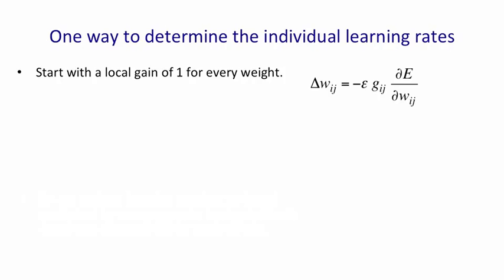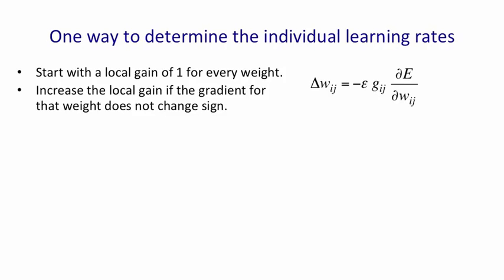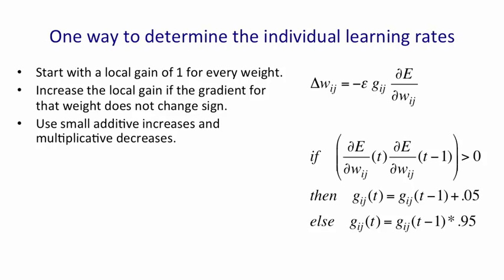Then what we're going to do is adapt Gij. We're going to increase Gij if the gradient for the weight does not change sign. And we're going to use small additive increases and multiplicative decreases. So if the gradient for the weight at time t has the same sign as the gradient at time t minus 1, we increase Gij by a small additive amount. If the gradients have opposite signs, we decrease Gij, and because we want to damp down Gij quickly if it's already big, we decrease it multiplicatively. That ensures that big gains will decay very rapidly if oscillations start.